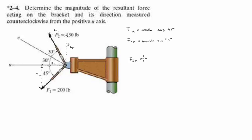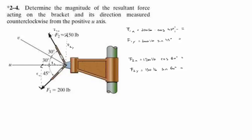F2x is 150 pounds times the cosine of 60 degrees. F2y is 150 pounds times the sine of 60 degrees. We're going to plug those numbers into our calculator. It's 200 times the cosine of 45 — F1x is 141.4 pounds.